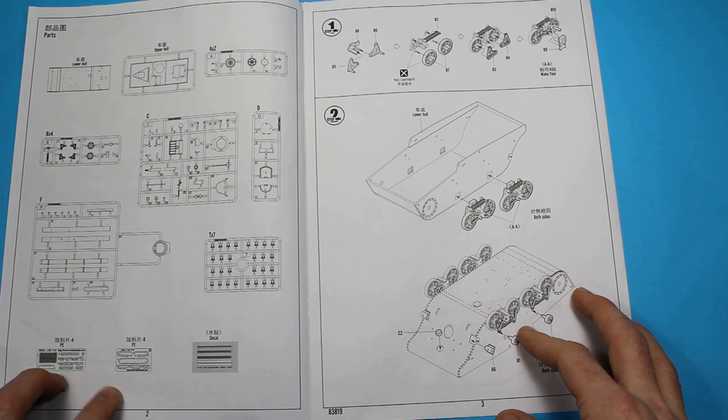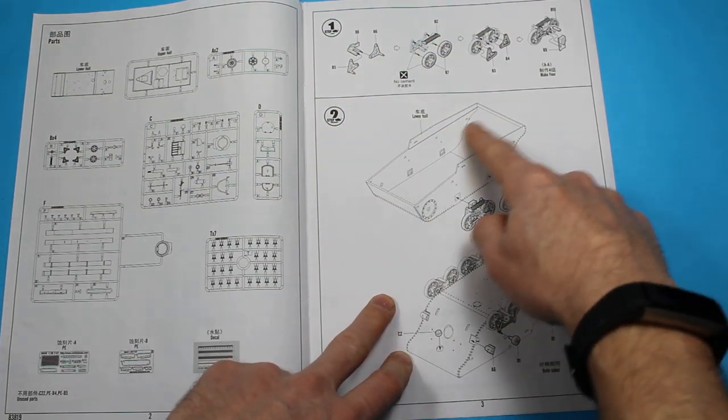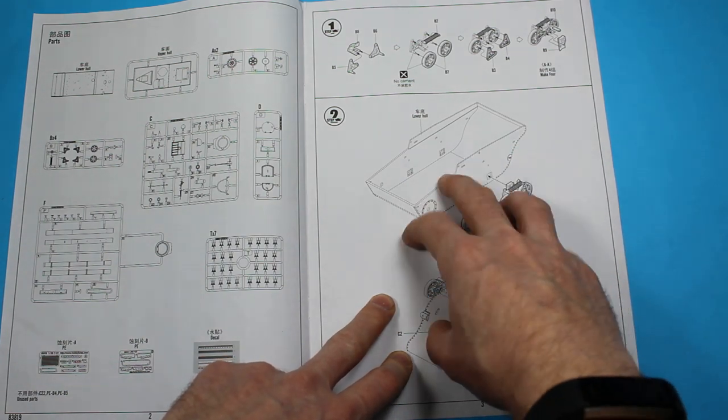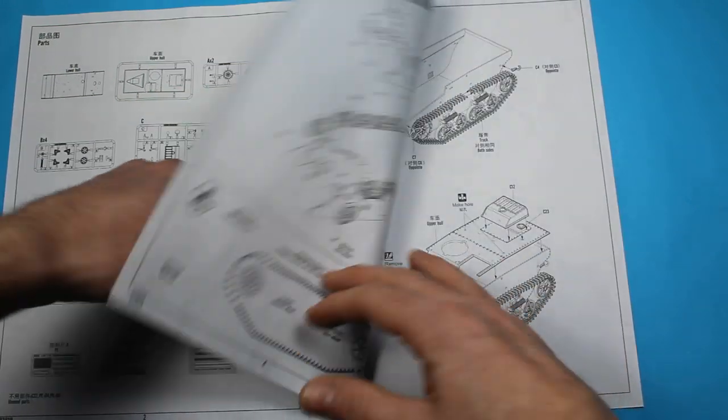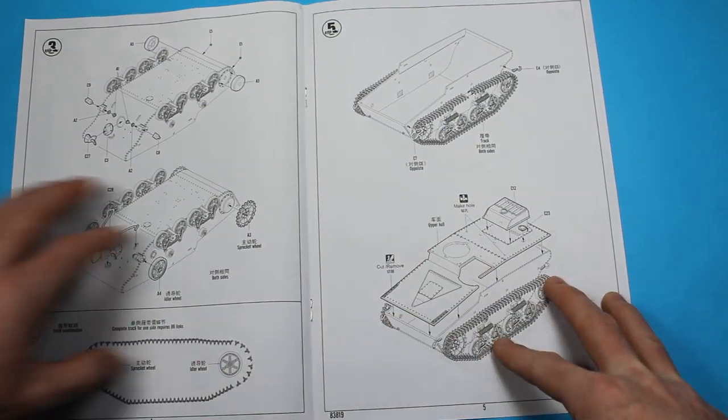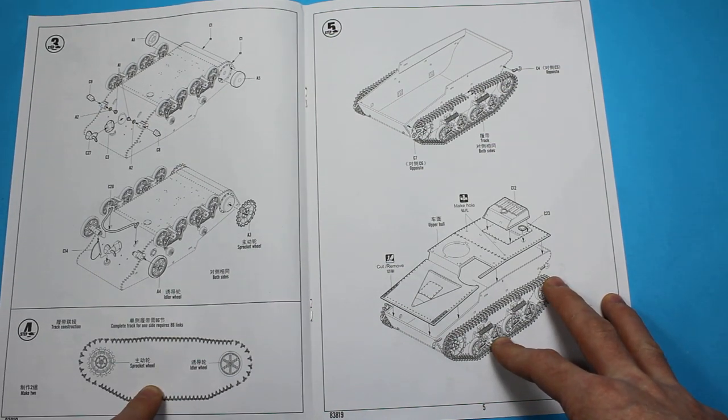We've also got some photo etch details in this one as well. It starts with the running gear, and then there's a bathtub-style lower hull already sorted and ready to go, so you just connect that up and mainly work on the wheels.